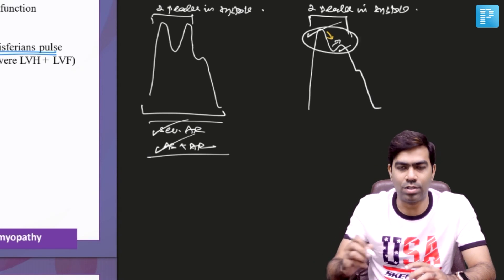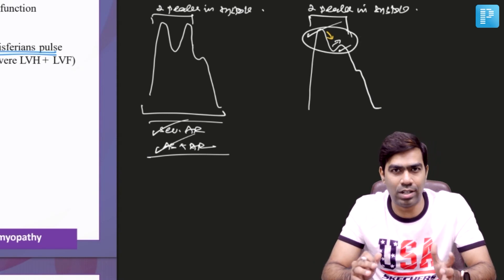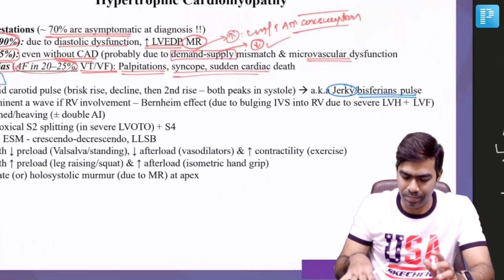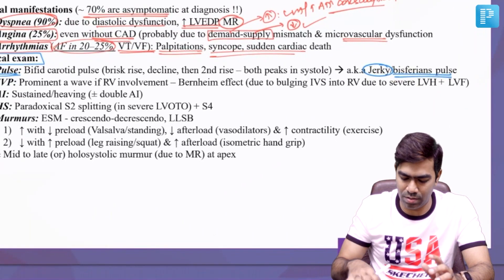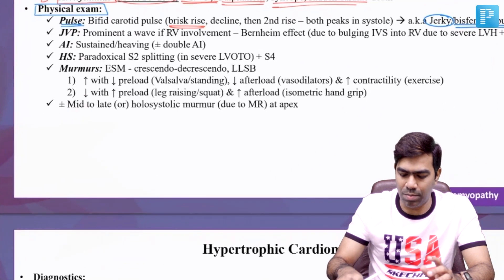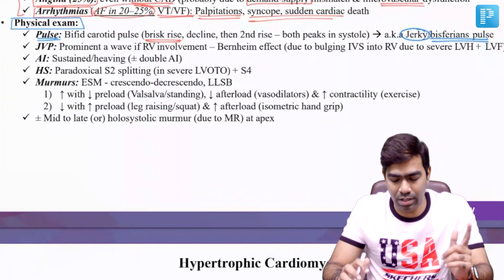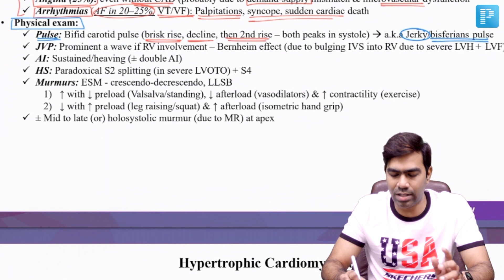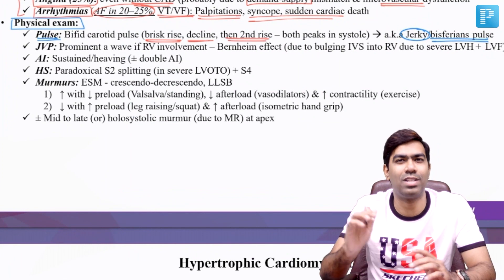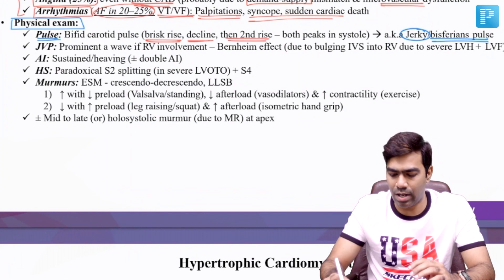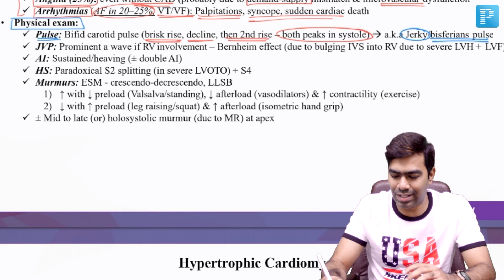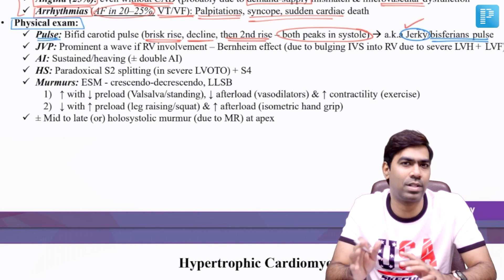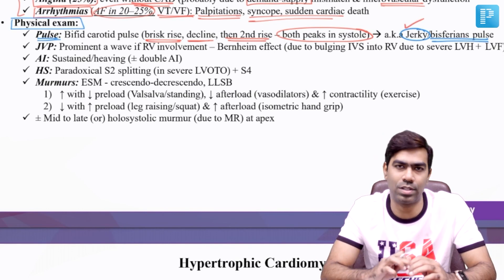This produces the classic jerky type of bisferiens pulse. The carotid pulse will have a brisk rise, then a sharp decline, followed by a slow second rise. Both peaks will be in systole. This is the classic jerky pulse, a kind of bisferiens pulse, seen in patients with obstructive forms of HCM.